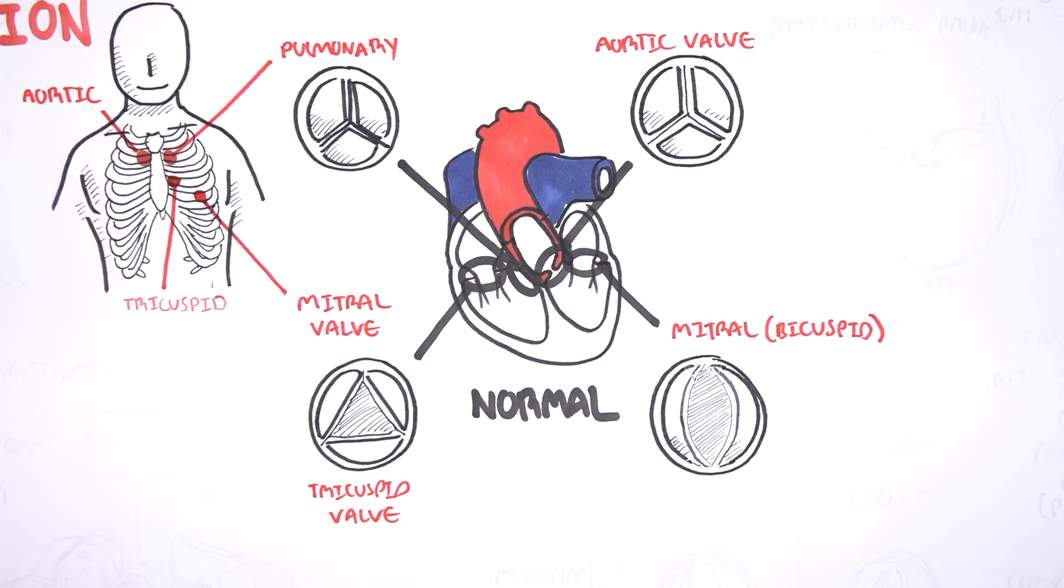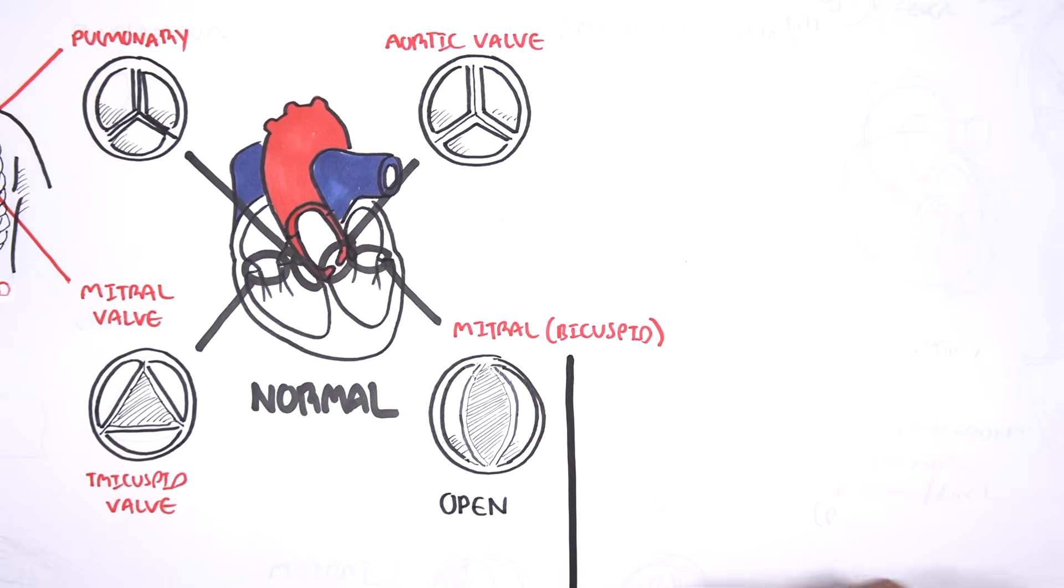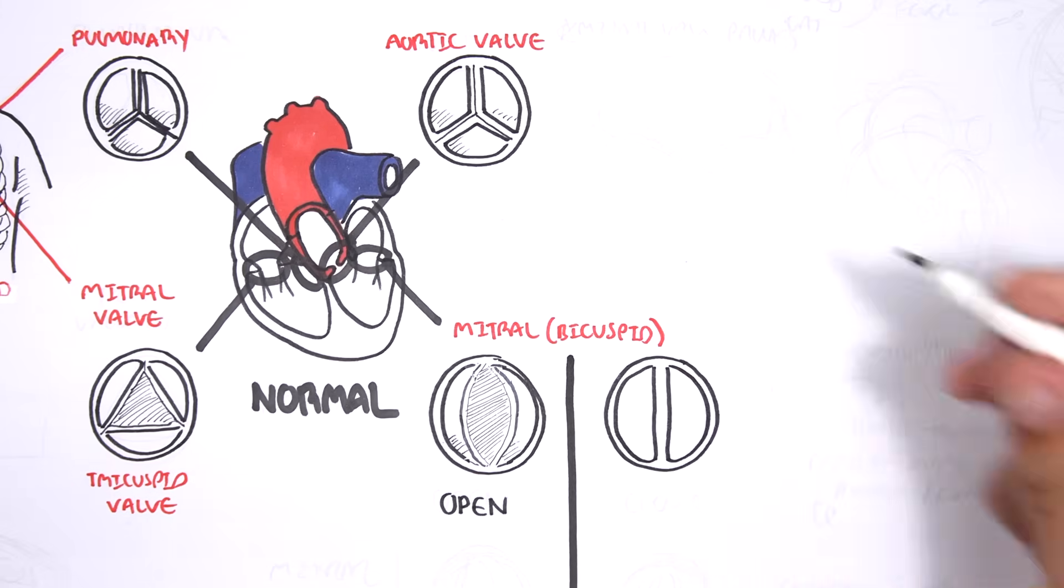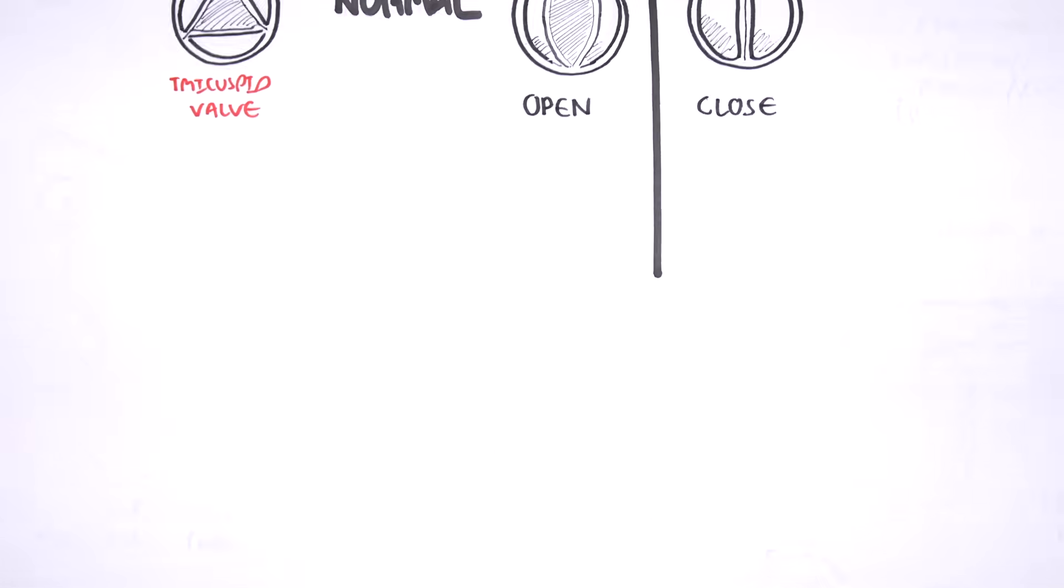During the cardiac cycle, the mitral valve and tricuspid valve open together. This is to allow the ventricles to fill with blood prior to systole. Here is a normal mitral valve open and closed.